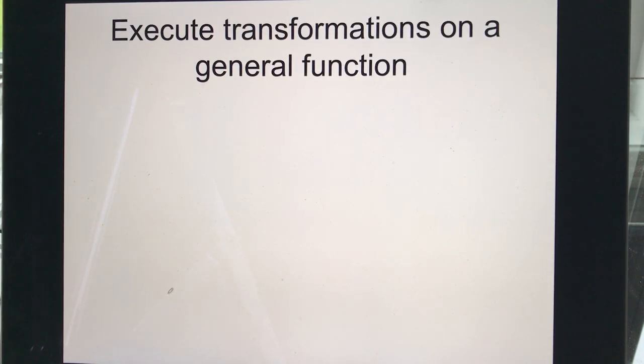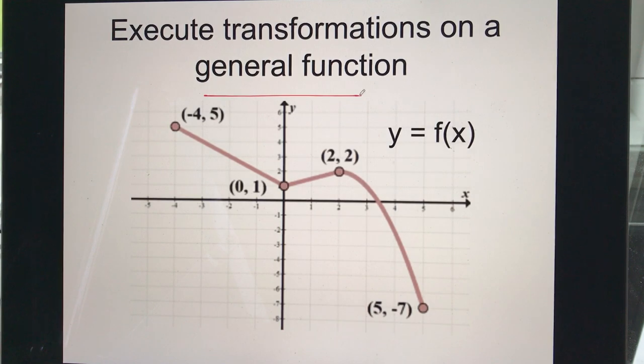We're not always going to deal with exact models that we've seen before. So sometimes we're just going to have what we call a general function. For example, here this is a function y equals f(x), and this doesn't really fit the models we've seen. It's not a quadratic, it's not a cubic, it's not a straight line. It's just kind of a made up specific function. We can execute our transformations on these functions as well.